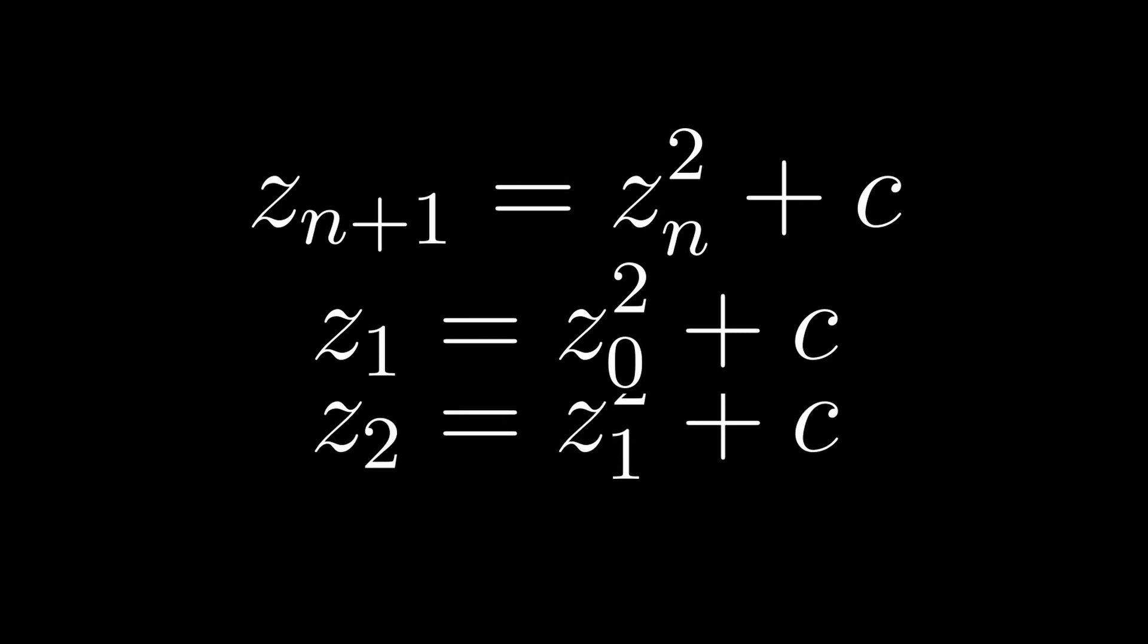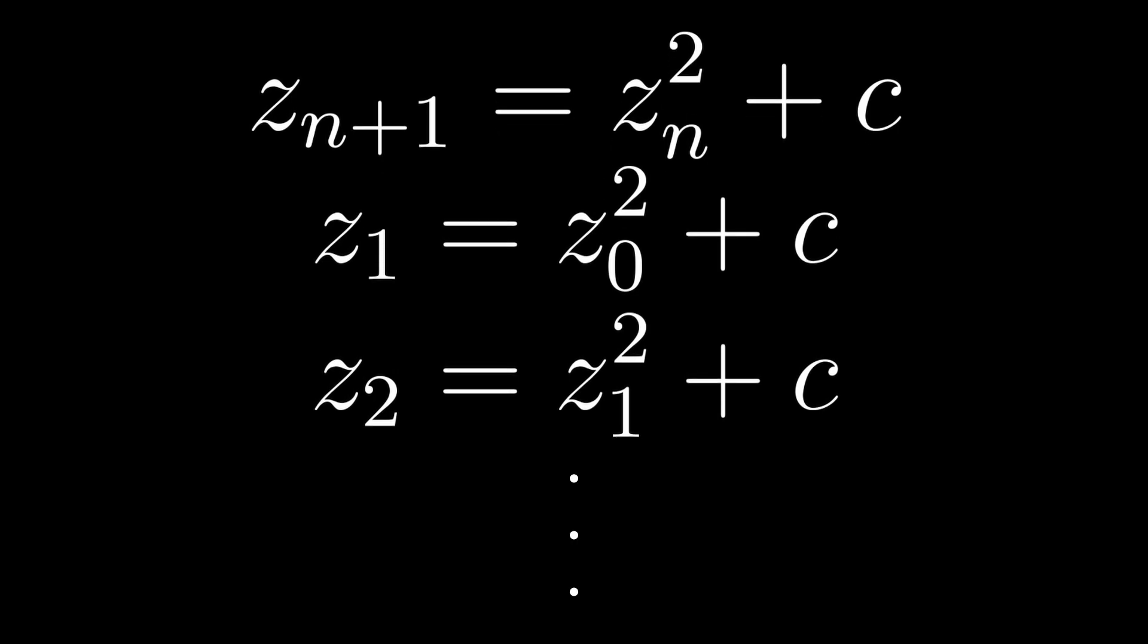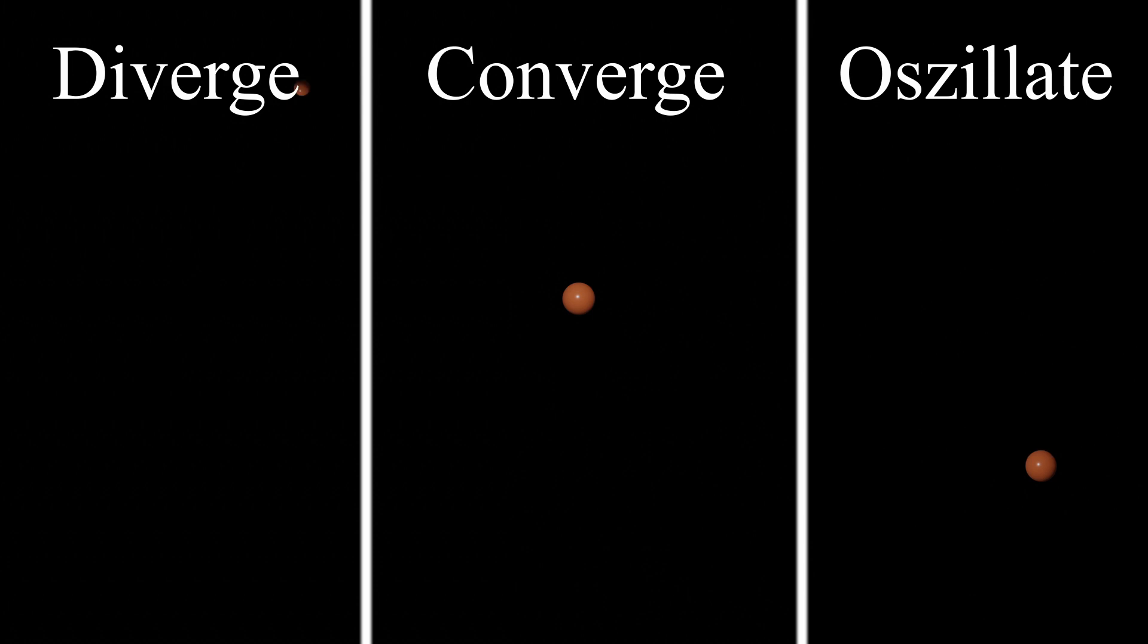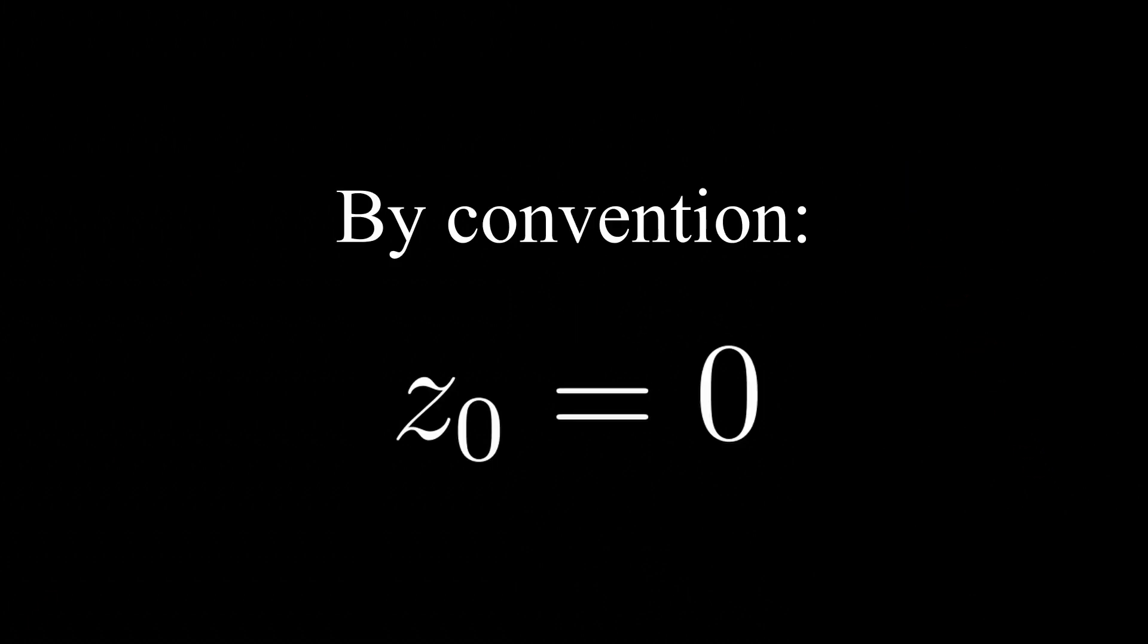Then we can calculate z sub 2 by plopping in z sub 1 and so on, forming an infinite series of z values. These values can either diverge, converge or oscillate. Per convention, z sub 0 equals 0, so the deciding factor into which of the three categories the series falls is the constant factor c.